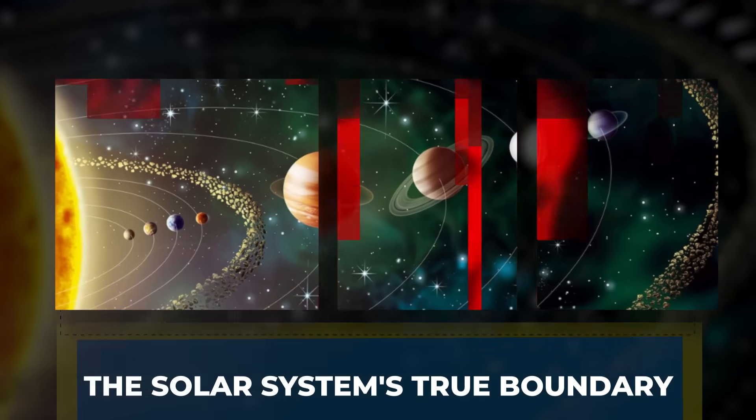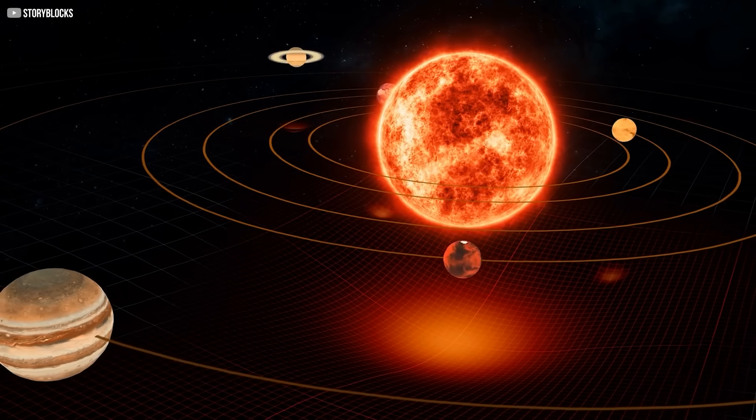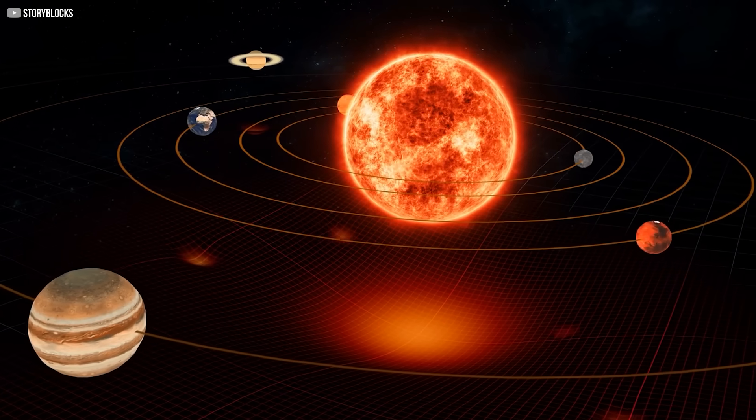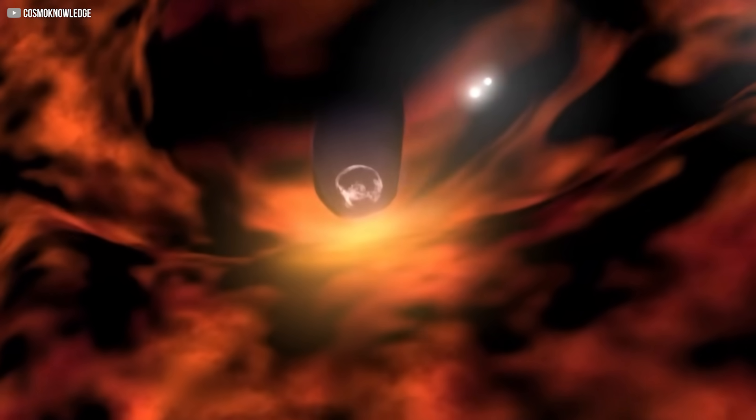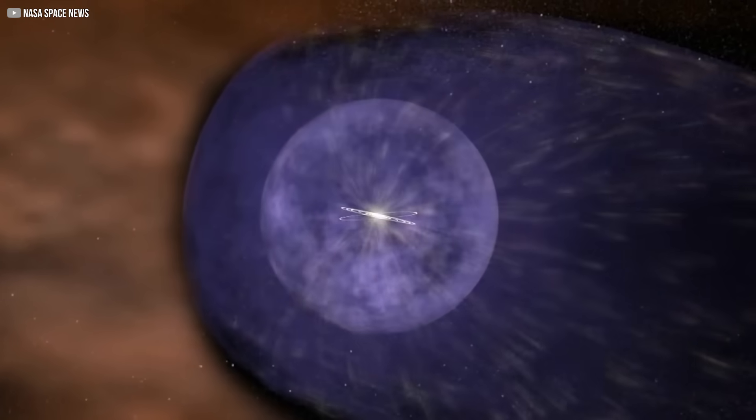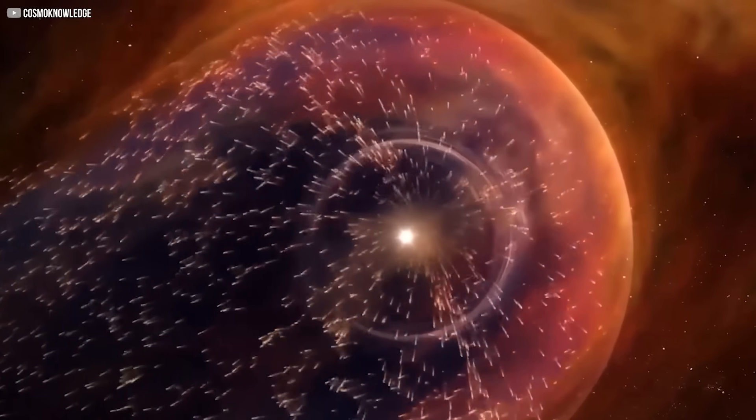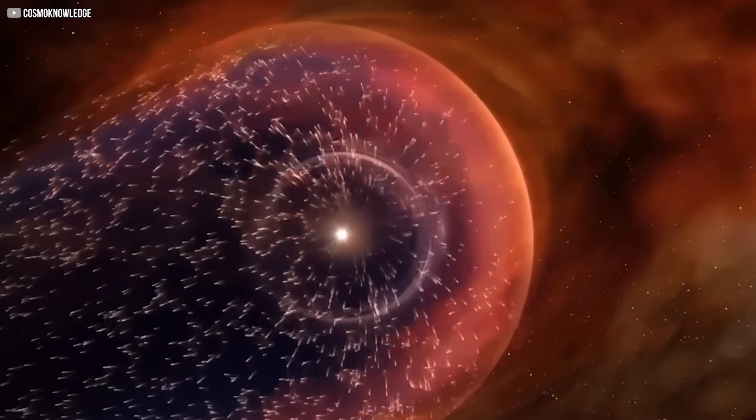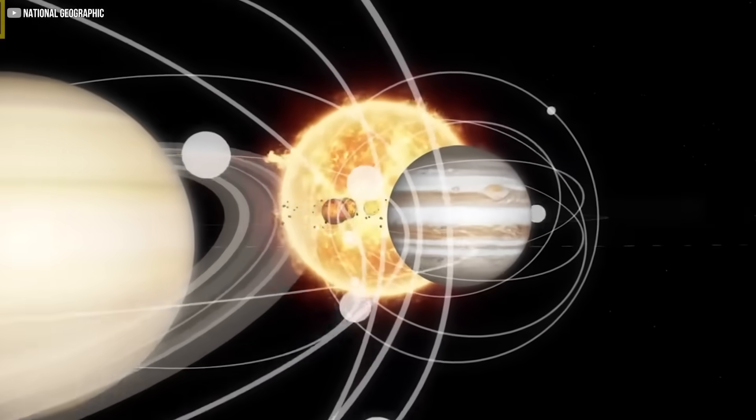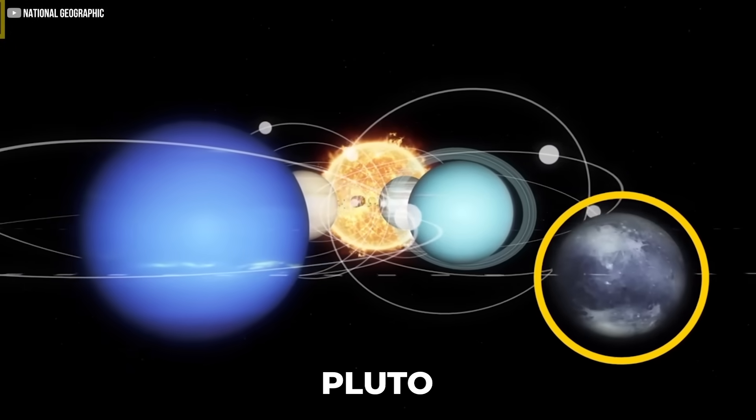The Solar System is far more expansive than the area marked by the planets we know. It stretches outward, encapsulated by the heliosphere, a vast bubble of charged particles streaming from the sun. This constant flow, known as the solar wind, pushes outwards in all directions, creating a protective shield that extends far beyond Pluto.